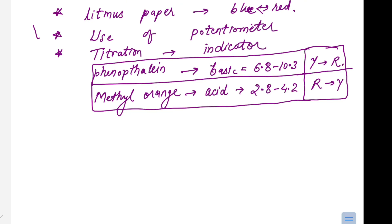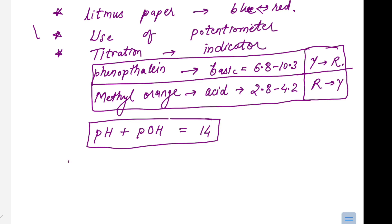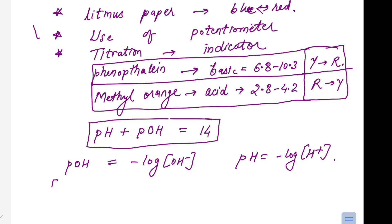Remember the name of these indicators, their color changes, and their pH ranges. One most important relation in pH is: for any particular aqueous solution, the summation of pH and pOH equals 14. pOH is defined similarly to pH as the negative log of OH⁻ concentration: pOH = −log[OH⁻]. The unit of concentration used here is moles per liter.